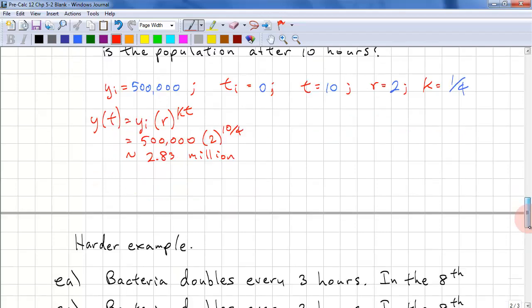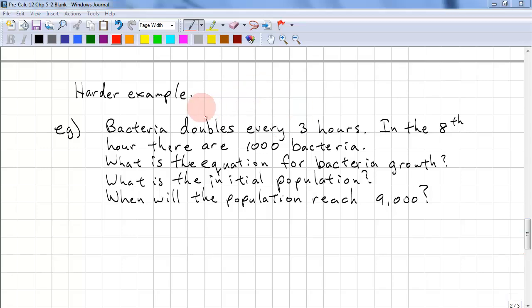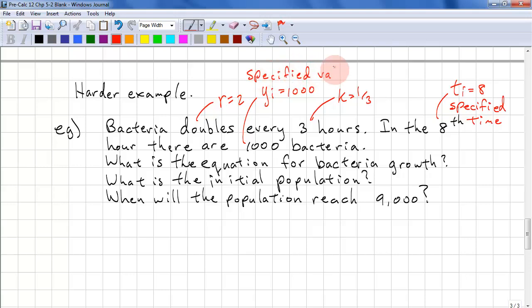Let's look at a harder example. Bacteria doubles every 3 hours, so we have r equals 2. And every 3 hours, so 1 over time, so k equals 1 third. In the 8th hour, so we have a specified time. ti equals 8. There are 1000 bacteria, so this is yi. And this is our specified value. Remember that it's only an initial value if time equals 0.